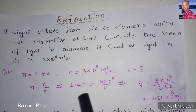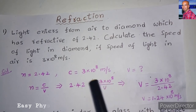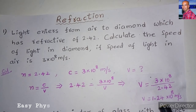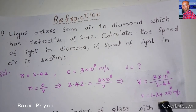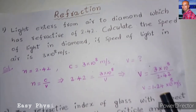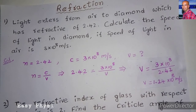By substituting the values and simplifying, we get the solution: 1.24 × 10⁸ meters per second.